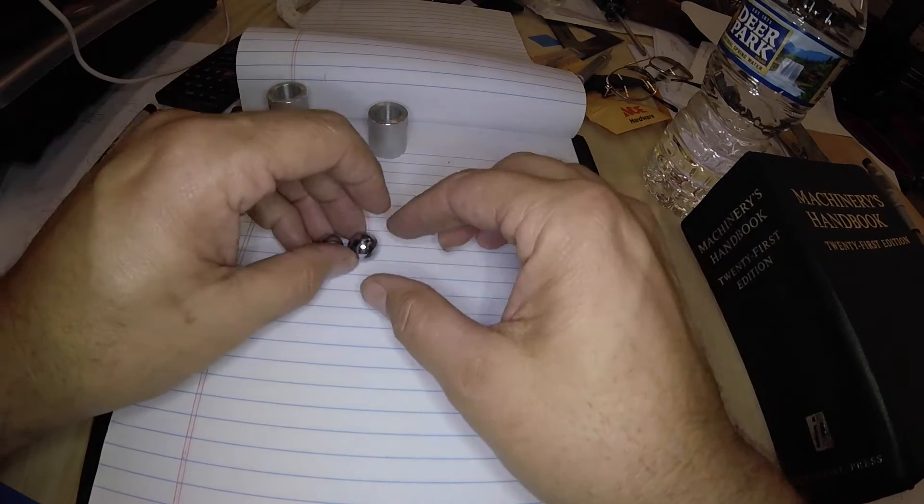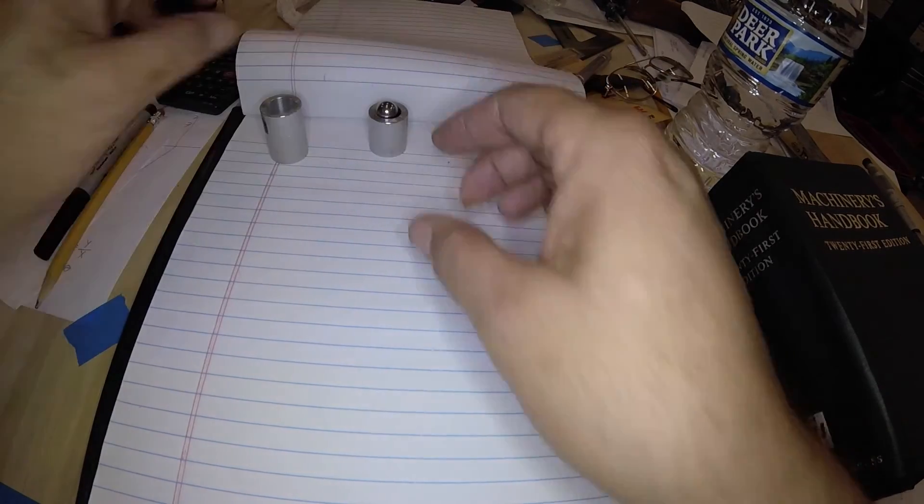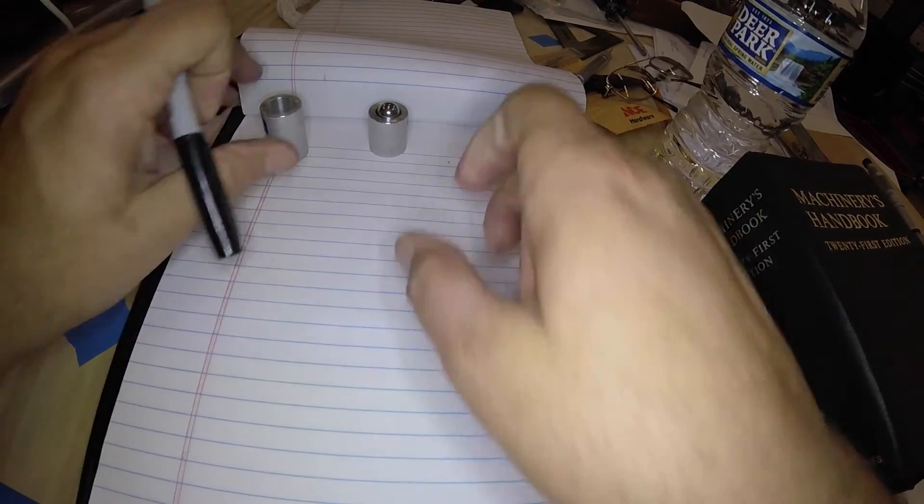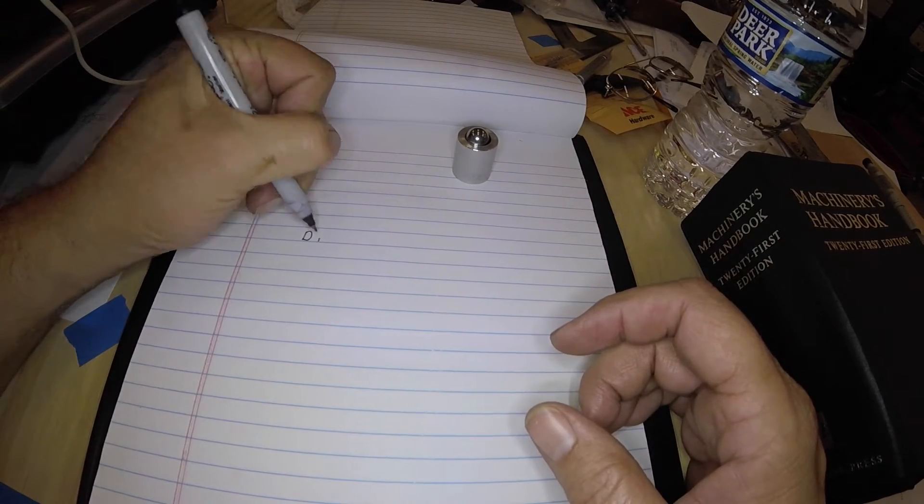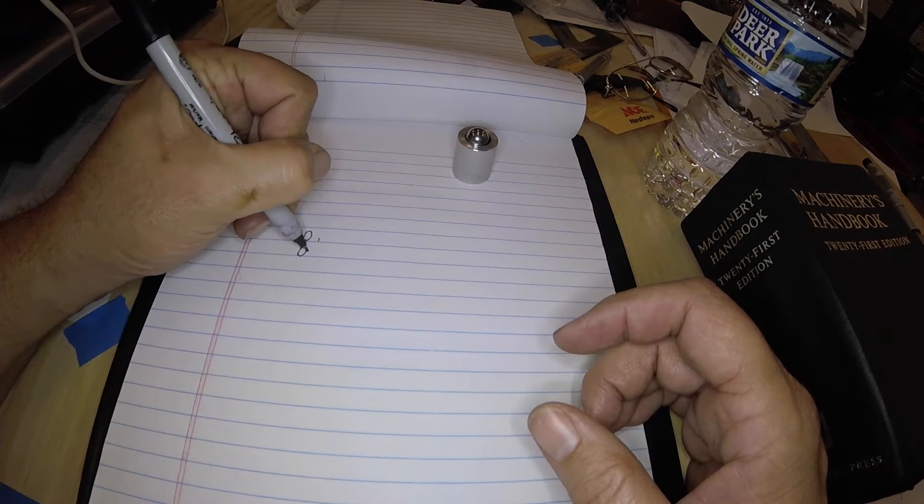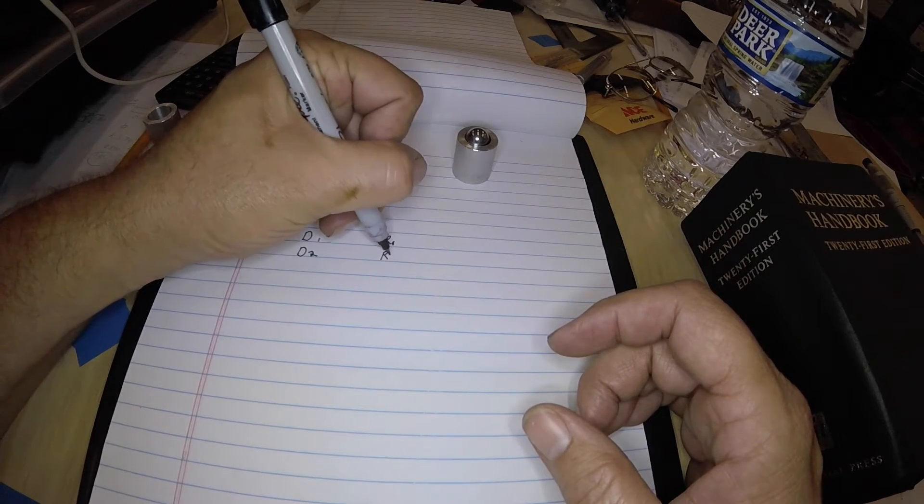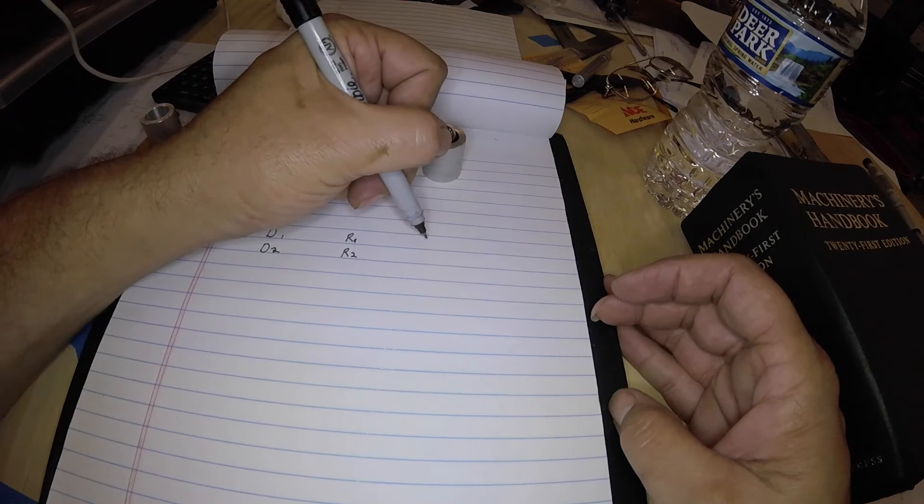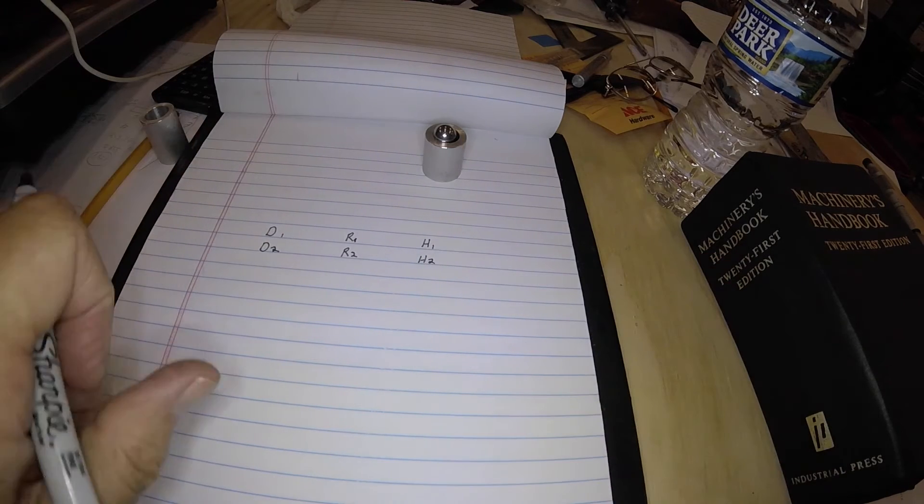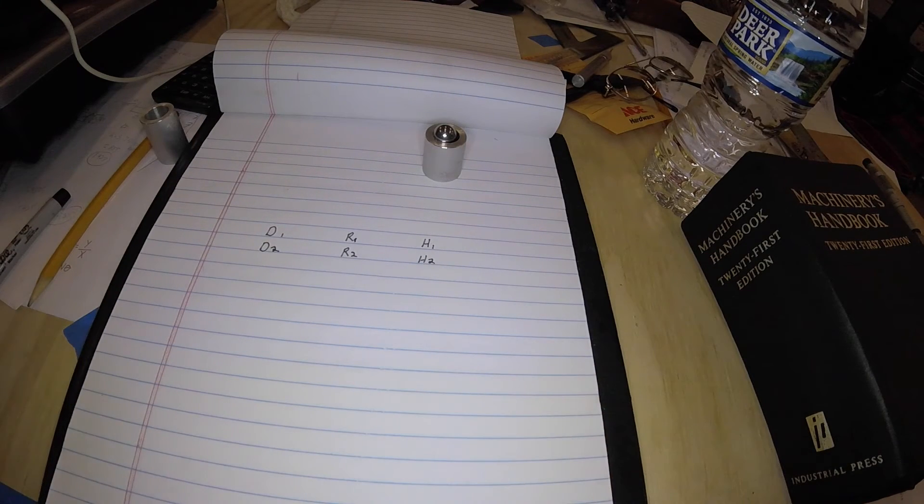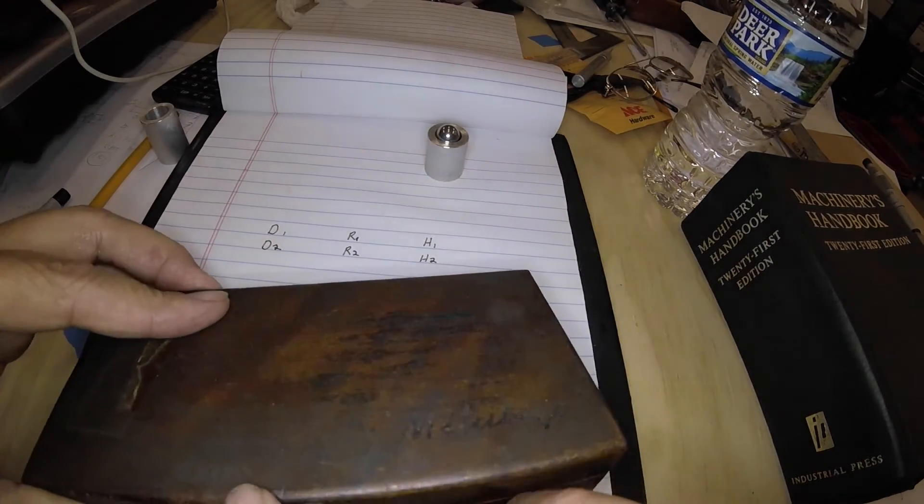I'm going to use two balls of different sizes to measure this taper. So let's measure the ball diameters. The large one, I'm going to call diameter one. The small one, I'm going to call diameter two. And then from that we'll get radius one and radius two. And then we're going to measure height one and height two.